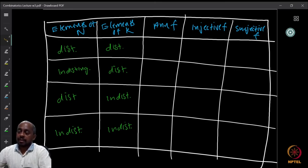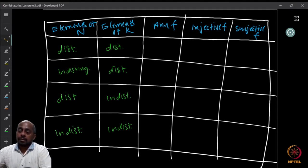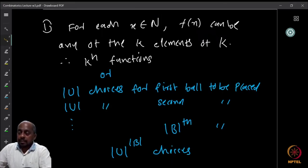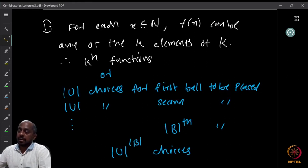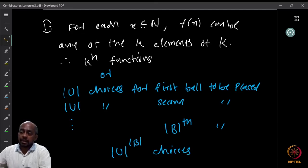We will either look at it as a function or as a balls-and-boxes question, and this will give some different intuition. Let us begin the first case. The first entry: we have distinguishable elements in N and labeled elements in K, and any function is allowed. This is the total number of functions from an n-element set to a k-element set, which is k raised to n.